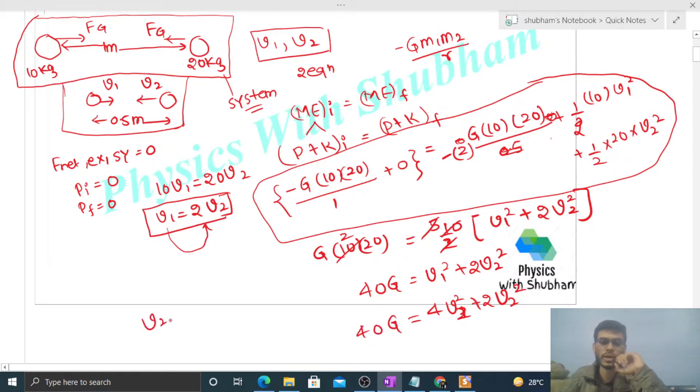So 6 times V2 squared equals 40G. V2 equals the square root of 40G divided by 6, and V1 will be twice of the square root of 40G by 6.